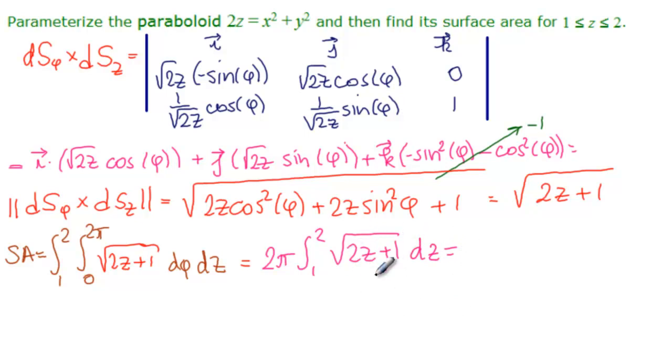Now you have to say to yourself, this is 2z plus 1 to the 1 half. So that would be 2z plus 1 to the 3 halves divided by 3 halves. But we also have to divide by the derivative of this. So that's 2. You're welcome to use a proper change of variable. What I said was the derivative of 2z plus 1 is 2. So I divide that out. And then I just have u, let's say, to the 1 half. So the integral is u to the 3 halves over 3 halves. And we need to evaluate this from 1 to 2.